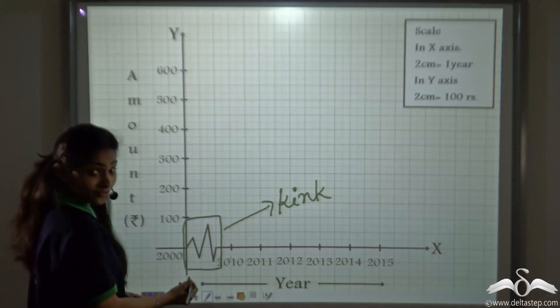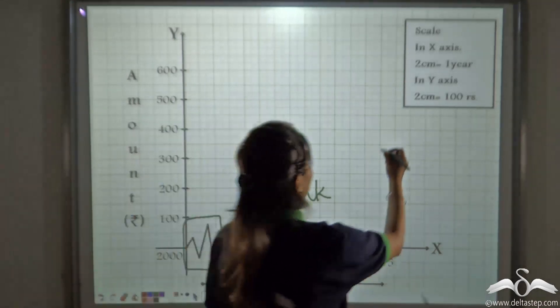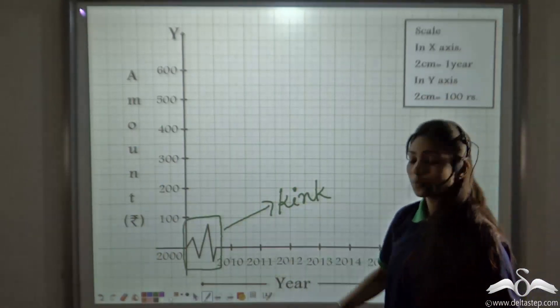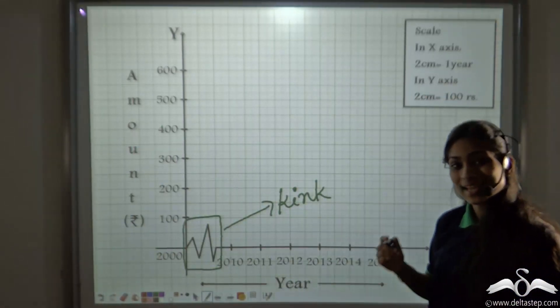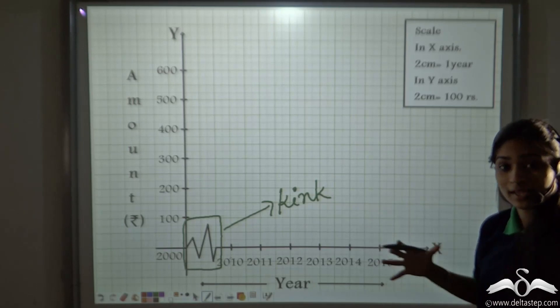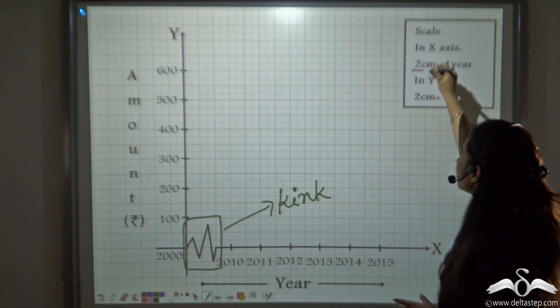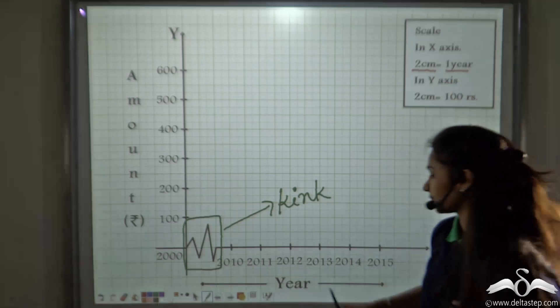Now, even after doing this you can see that we have changed the scale also. First, we were taking the scale as 1 cm as 1 year which was making it very clumsy. Now you can see we have taken 2 cm as 1 year.